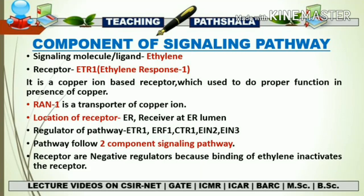Since it is a copper ion-based receptor, there should be a transporter that helps in the transportation of this copper ion to the surface of the receptor. The role of this copper ion transporter is going to be played by RAN1, which is a transporter of copper ion that helps transport copper to the Ethylene receptor surface.